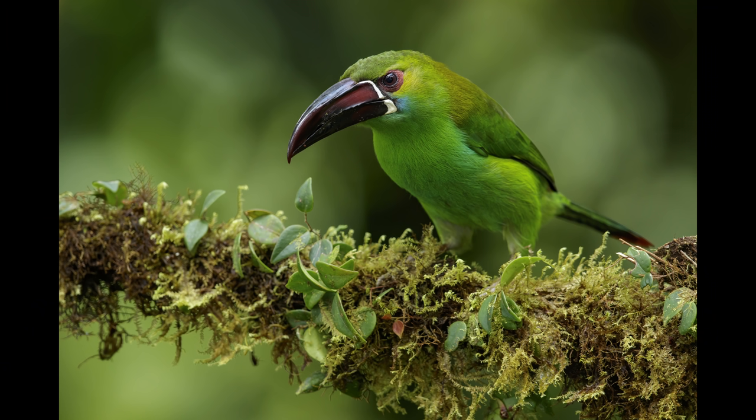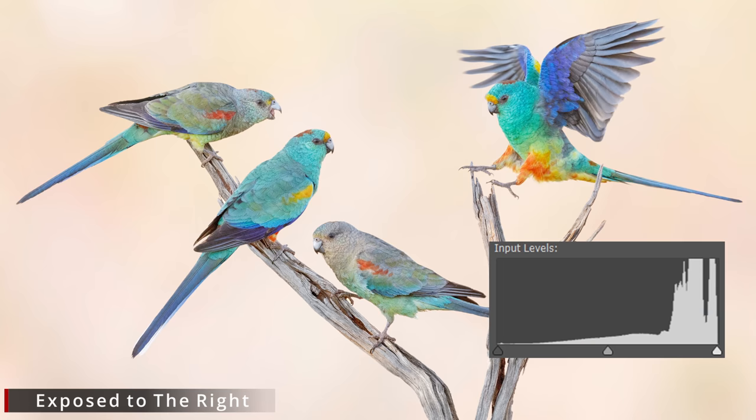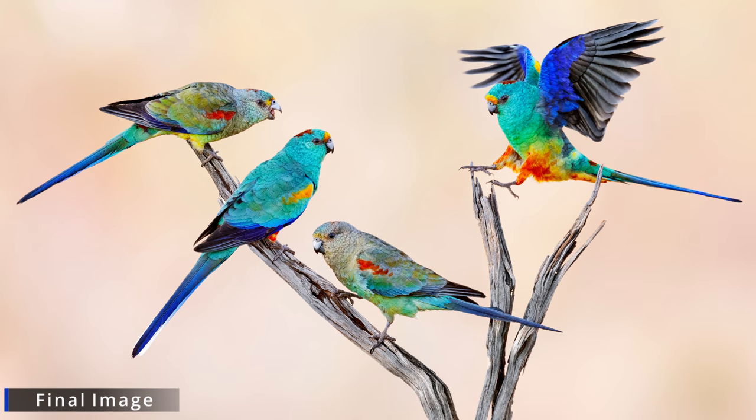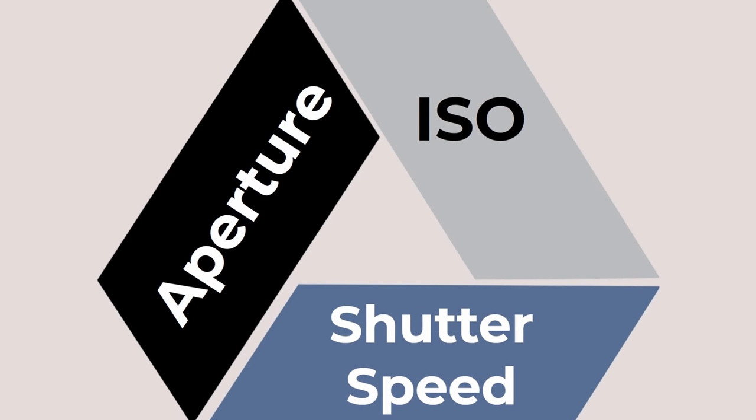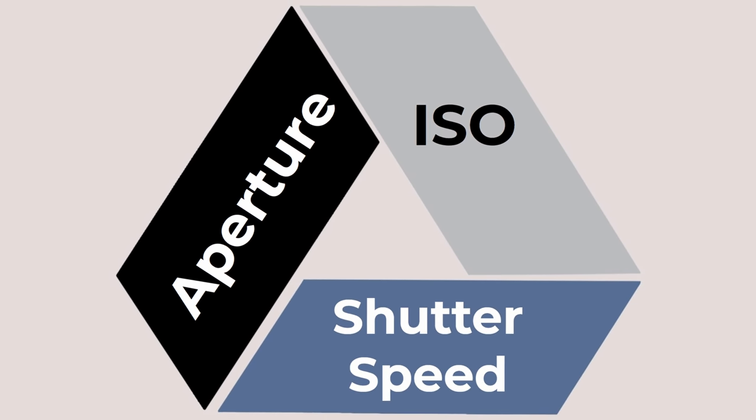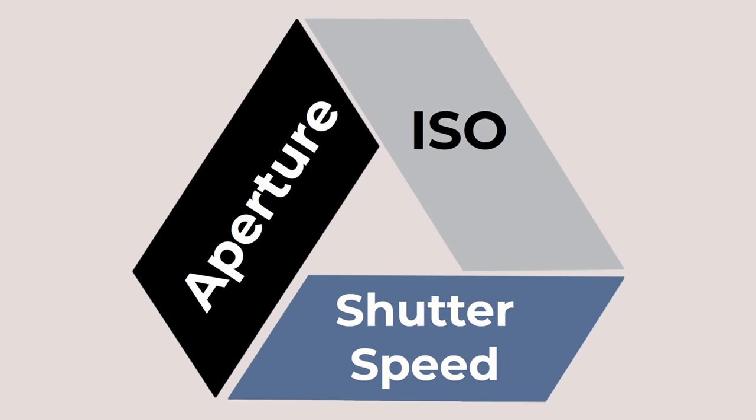Sometimes it's good to break something down to its component parts and think about what you're actually trying to do in order to achieve great results. Let's get into our first essential element, which is exposure. Obviously, if you're going to take beautiful bird photos, you have to expose them properly. The most important thing is to understand the ISO, the shutter speed, and the aperture.